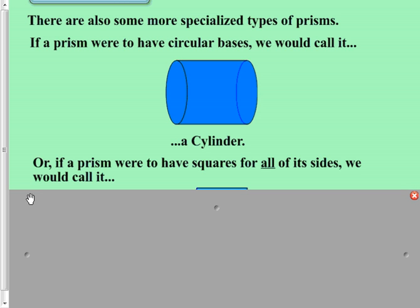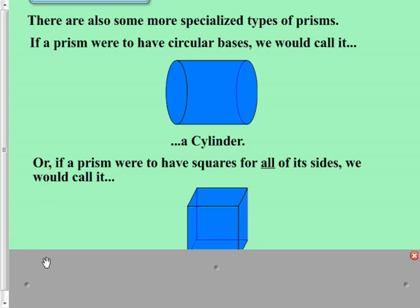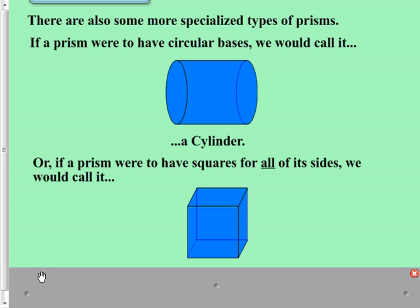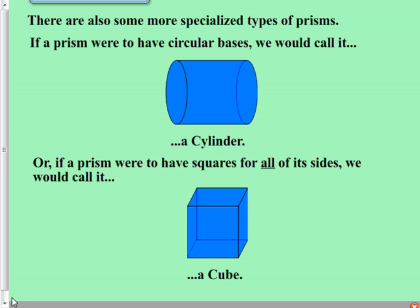Now, back to the discussion about a rectangular prism that has squares for its bases. Now, we said that if it just had two sides that were squares, we would go ahead and call it a rectangular prism. But what happens if all of the sides of the rectangular prism are squares? If that's the case, if a prism has squares for all of its sides, we don't call that one a rectangular prism anymore. As I'm sure you're already aware, we call that one a cube.